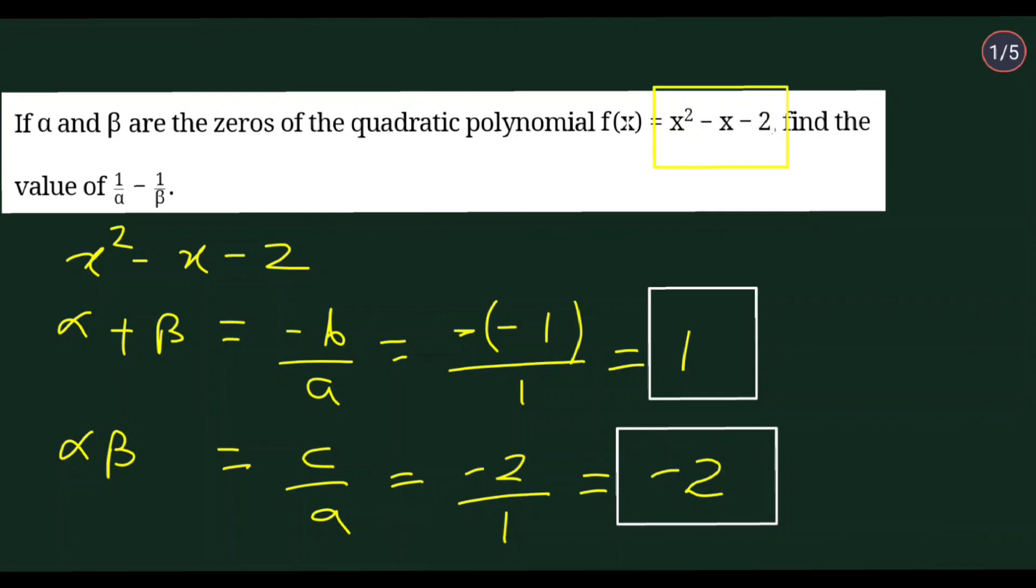And whatever values of zeros you get, you can put those zeros here and get the answer. And once again, in this method also you will get 2 answers. One is plus 3 by 2, one is minus 3 by 2.